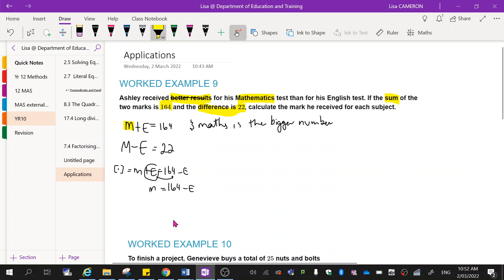Now I'm going to substitute this m into this position for the second one. So m minus e equals 22, which is from equation two. I'm going to substitute in m is 164 minus e minus e equals 22. Now I didn't make my equal signs line up. Hate that for me. We're going to be more careful with that in the next part.